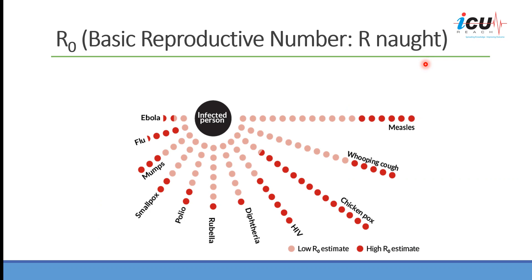In order to understand what we mean by herd immunity, we have to understand the concept of basic reproductive number, or R-naught. R-naught is a number that indicates how many people will be infected from exposure to a single infectious case. For example, measles has an R-naught of 12 to 18, meaning that a single case of measles will infect between 12 to 18 people around it.